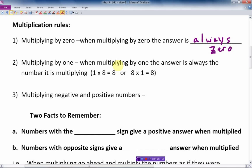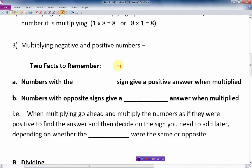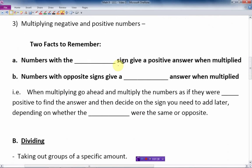Now, multiplying negative and positive numbers. There's two facts to remember. A, numbers with the same signs give a positive answer when multiplied. B, numbers with the opposite signs give a negative answer when multiplied.